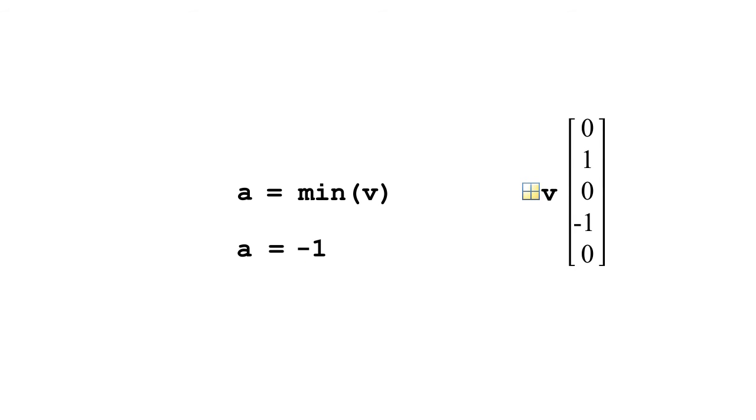If you guessed negative 1, you're correct. When we pass a vector to the min function, it returns the smallest value in the vector. What you may not have known is that the min function can also tell us the location of the smallest value. Here it tells us the location is 4, since the smallest value of the vector is negative 1, which happens to be the fourth element of the vector.